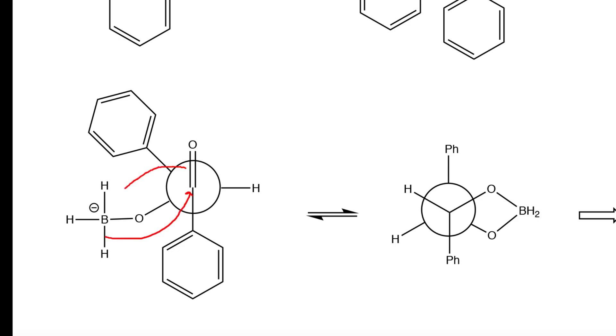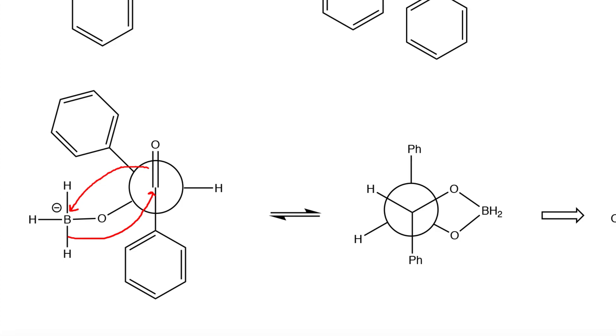and the pi electrons right here will form a bond with this boron, just as we've seen in the first reduction. The result of that reduction forms this intermediate right here.